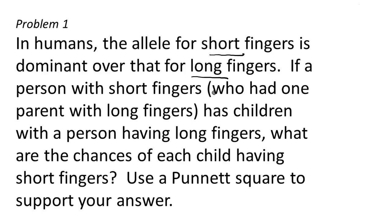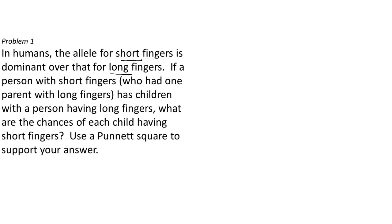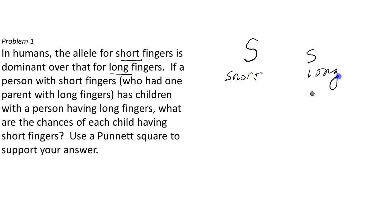Let's use a Punnett square to answer this problem. A person with short fingers has a dominant allele, so we use a capital S to stand for short. But they had a parent who had long fingers, which is the recessive allele, and we'll use a small s to stand for long fingers. Recall that genes come in pairs — there is a gene on each of the two homologous chromosomes called alleles. So when we talk about a person's genotype, we have to have two alleles. The person with short fingers who has a parent with long fingers would have a heterozygous genotype: a capital S and a small s.